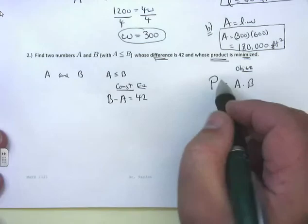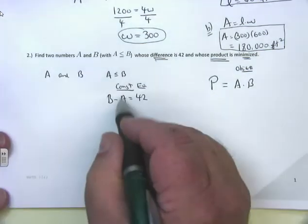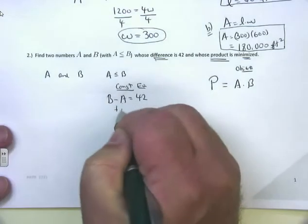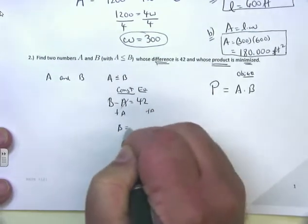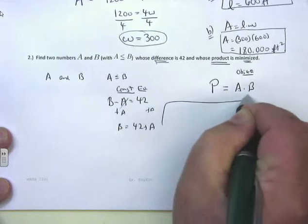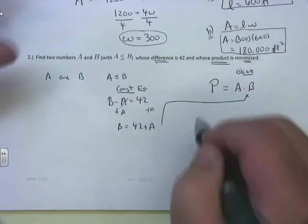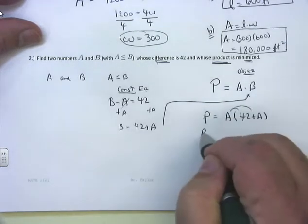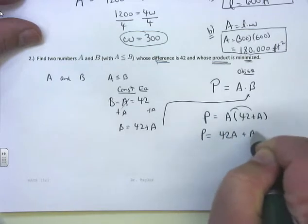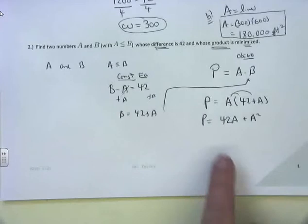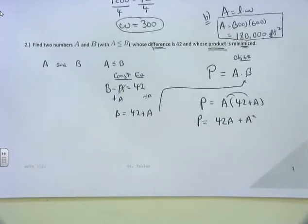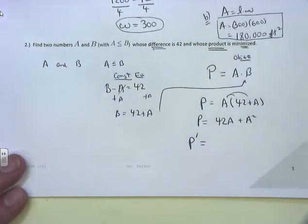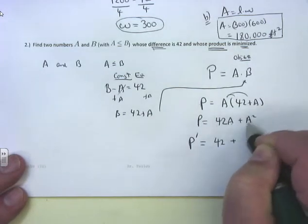There are too many variables, so I'm going to go to my constraint equation and solve for one variable. What's the easiest variable to solve for if B minus A equals 42? I'll solve for B by adding A to both sides: B equals 42 plus A. Substituting into the objective equation gives P equals A times (42 plus A). Distributing: P equals 42A plus A squared. That's the objective equation in terms of one variable. Now take the derivative: the derivative of 42A is 42 plus the derivative of A squared is 2A. Set equal to zero.